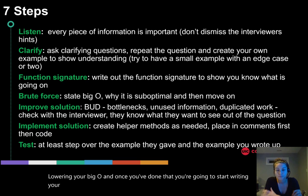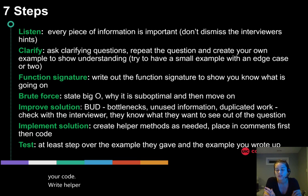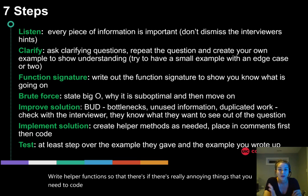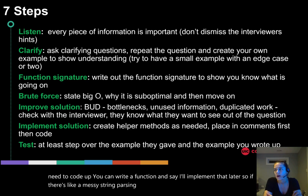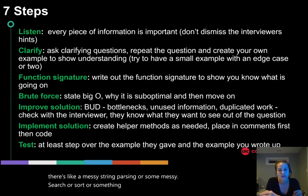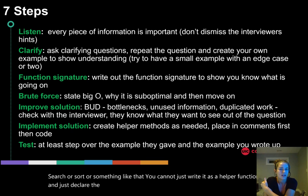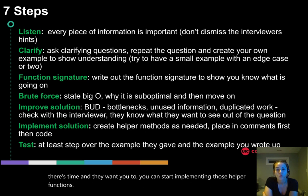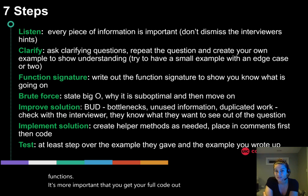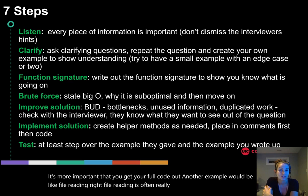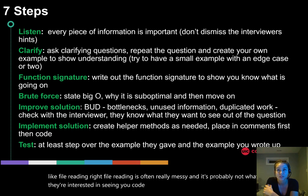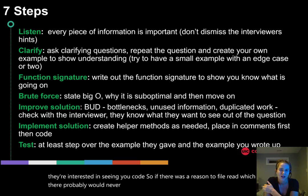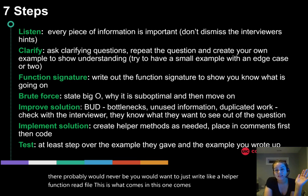Once you've optimized, start writing your code. Write helper functions for really annoying things you need to code up — declare the function and say you'll implement it later. For example, messy string parsing, searching, sorting, or file reading can be written as helper functions. It's more important to get your full solution out, and at the end if there's time, you can implement those helpers.